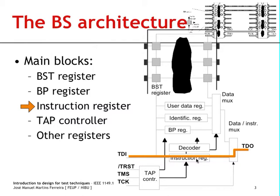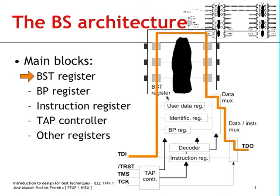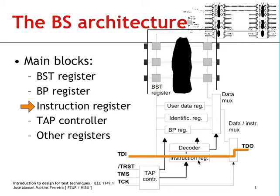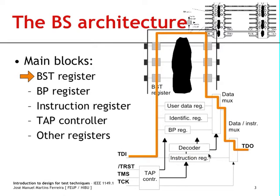The instruction register is the block where you will store the binary code controlling the data multiplexer. We will always have to start by shifting in a bitstream into this instruction register, and this bitstream — the instruction code — will define how the data multiplexer operates. So we can specify that we want the boundary scan register placed between TDI and TDO by shifting in an instruction that controls this multiplexer to operate as shown.